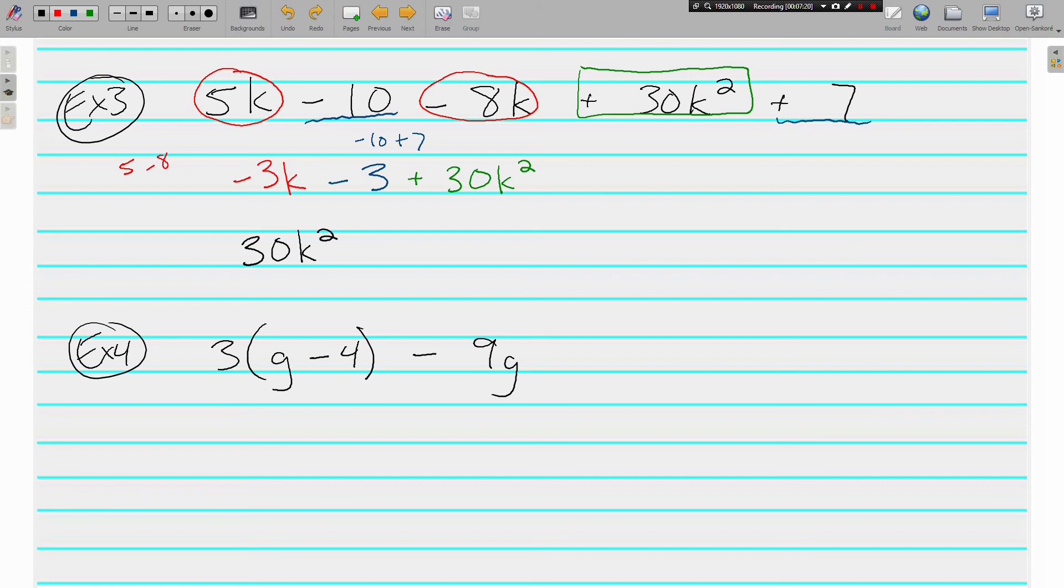The 30k squared was positive. It's still positive when I rewrite. Next comes negative 3k. And then your last term should be your term without your variable. Now please understand, I changed the order, but I did not change the sign of each term. That's very important. You can mix the numbers around, but you can't change which ones are positive and which ones are negative.